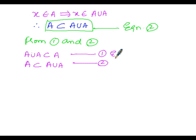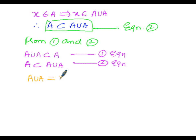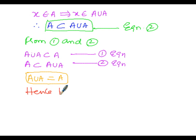From equations 1 and 2 — A union A is a subset of A, and A is a subset of A union A — it is clear that A union A equals A. Hence proved.